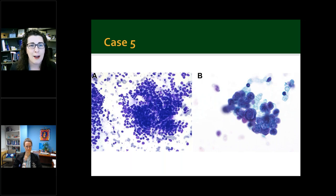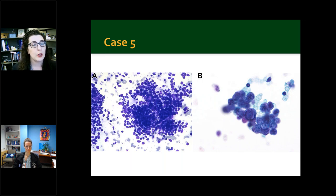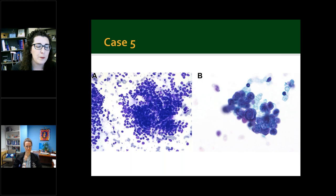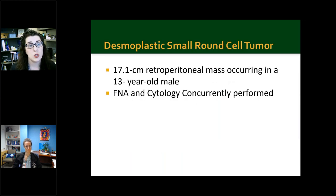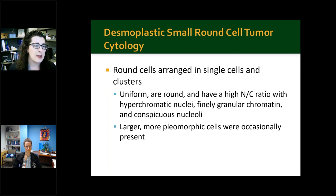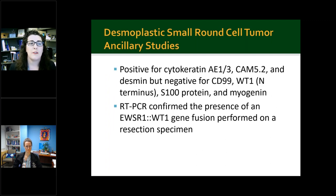Case five shows another small round cell tumor with mild anisonucleosis and scant cytoplasm. Similarly to Ewing sarcoma smears, there is finely granular chromatin, irregular nuclear membranes, and conspicuous nucleoli. In picture B you can see one larger pleomorphic cell in the center. This was classified as a desmoplastic small round cell tumor — a 17 centimeter mass in a 13-year-old male. FNA and cytology were concurrently performed. You can have uniform round cells with finely granular chromatin and conspicuous nucleoli, and occasionally larger pleomorphic cells. Tumor cells are positive for cytokeratins but negative for CD99, WT1, S100, and myogenin. RT-PCR confirmed the presence of the gene fusion on the subsequent resection specimen.